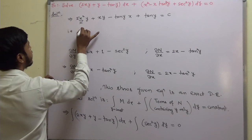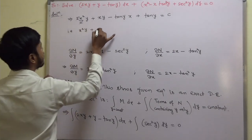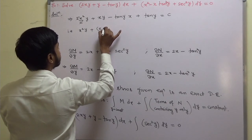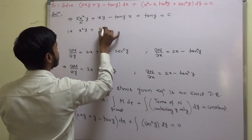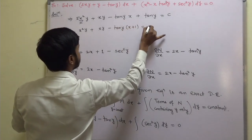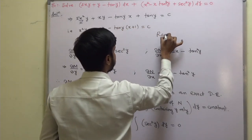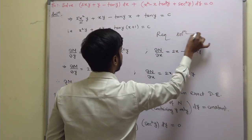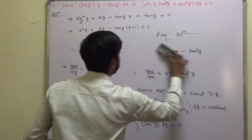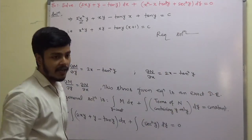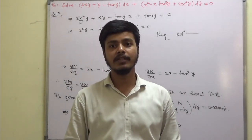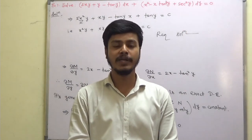So the required solution is x squared y plus xy minus tan y times x plus tan y equals c. I hope the two problems we have taken are clear to you. Thank you for watching, enjoy learning, keep supporting, thank you very much.